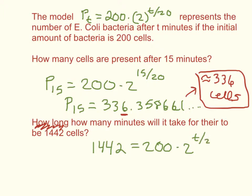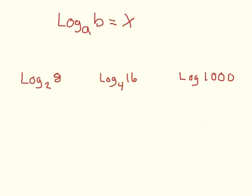We could approach this by plugging values in for T — we know it's going to be more than 15, because at 15 minutes there were 336 cells, so maybe we'd try 16, 17, or 30. But in this podcast, I'm going to go over a way that we can actually solve for T. To do that, I need to explain what a logarithm is, because in order to get that variable out of that exponent, we're going to need to talk about logarithms.